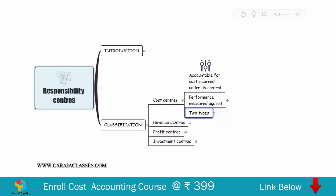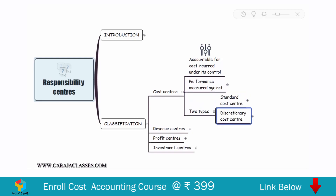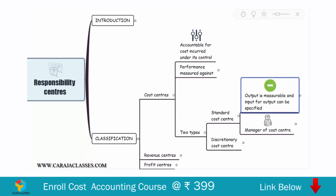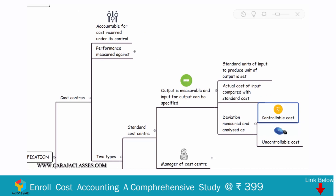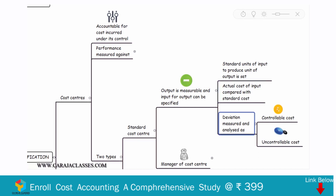Cost centers can be classified into two types: standard cost centers and discretionary cost centers. A standard cost center is one where output is measurable and the input required for producing one unit of output can be specified. The standard units of input required to produce one unit of output can be set, so the actual cost of input can be compared with the standard cost. If there is any deviation, it can be measured and analyzed — whether it is controllable or uncontrollable.